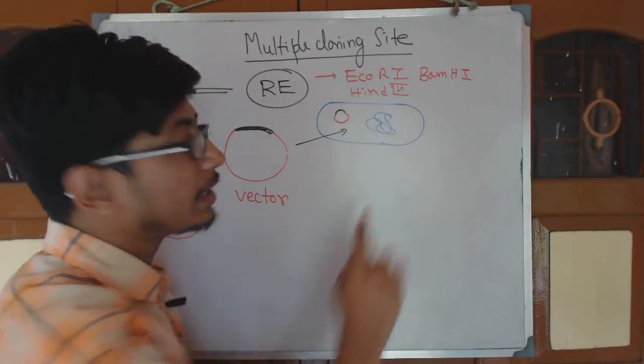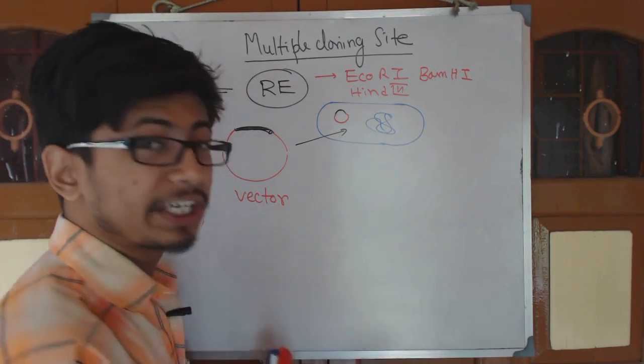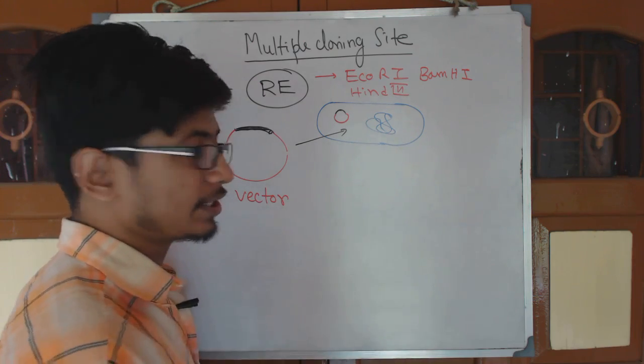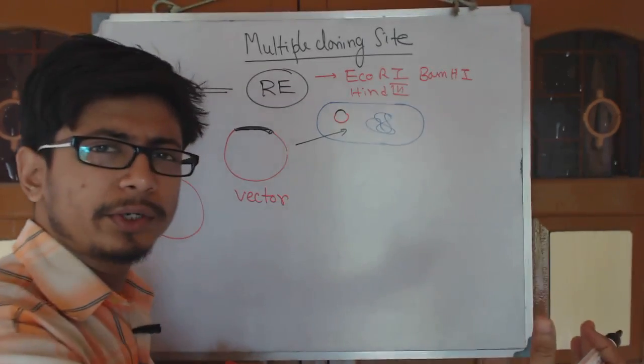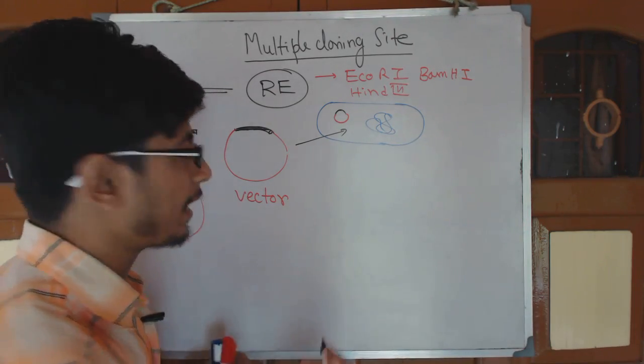Restriction endonucleases have recognition sequences, or restriction enzyme recognition sequences. That sequence might be three nucleotides long, four nucleotides long, or six nucleotides long. If it is three nucleotides long we call it a tricutter, if four nucleotides then tetracutter.